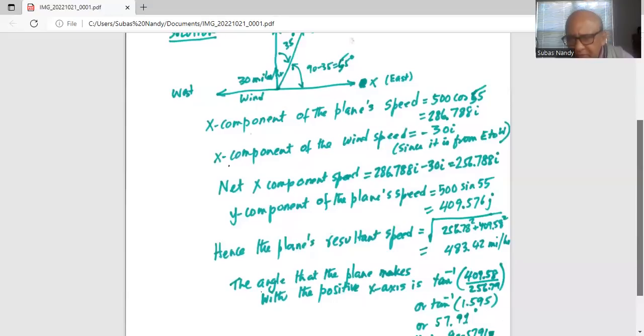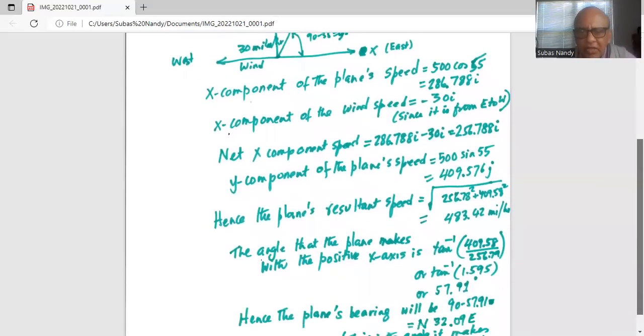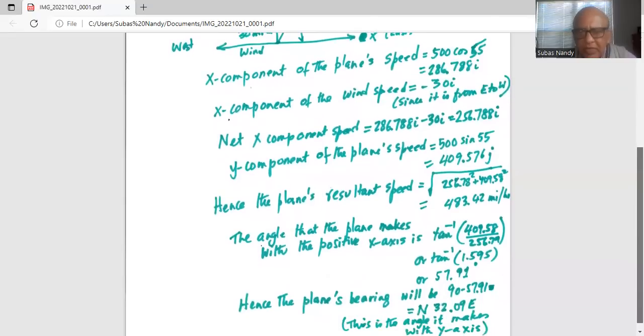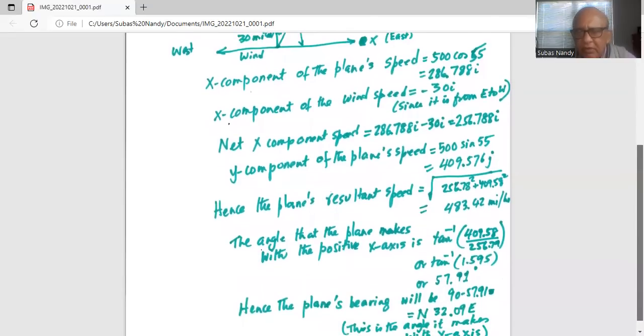And please remember to set the calculator to measure the angle in degrees, which works out to 57.91 degrees. Hence, the plane's bearing will be 90 minus 57.91.